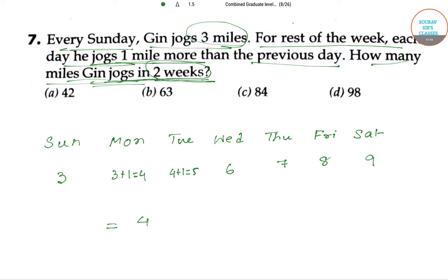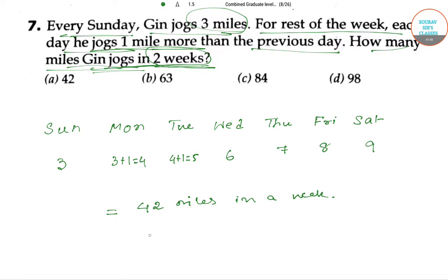So if we add it all up, he runs 42 miles in a week. Now for 2 weeks, 42 into 2, that is 84 miles in 2 weeks. So this is our answer — option C, that is 84.